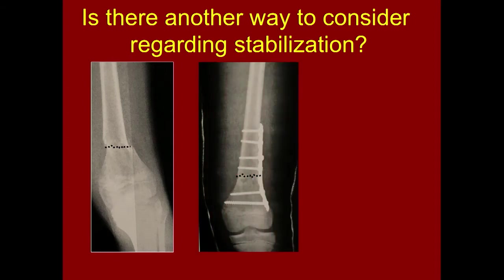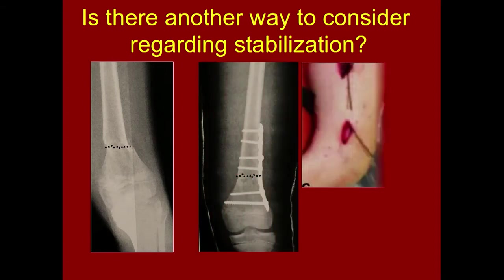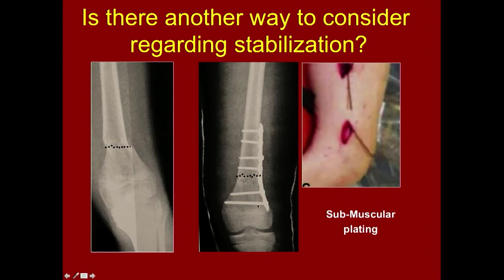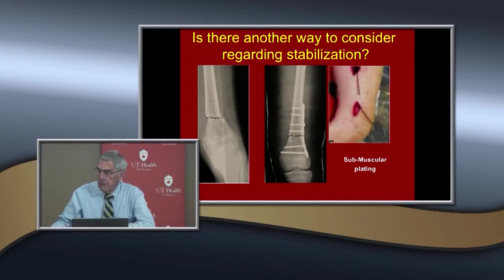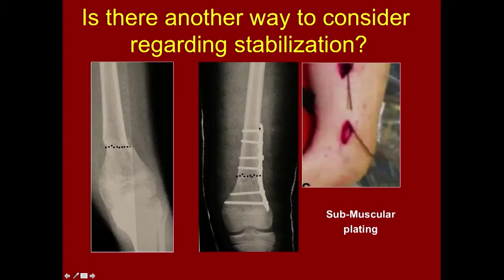Another stabilization option is a submuscular plate. You need to make sure the distal pin is slightly proximal to the physis. What are the problems? The plate serves as a stress riser — we've had fractures right at that point after healing. Also, there are reports that the plate can inhibit metaphyseal growth and lateral physis growth, leading to valgus deformity. So the plate needs to be removed after healing.